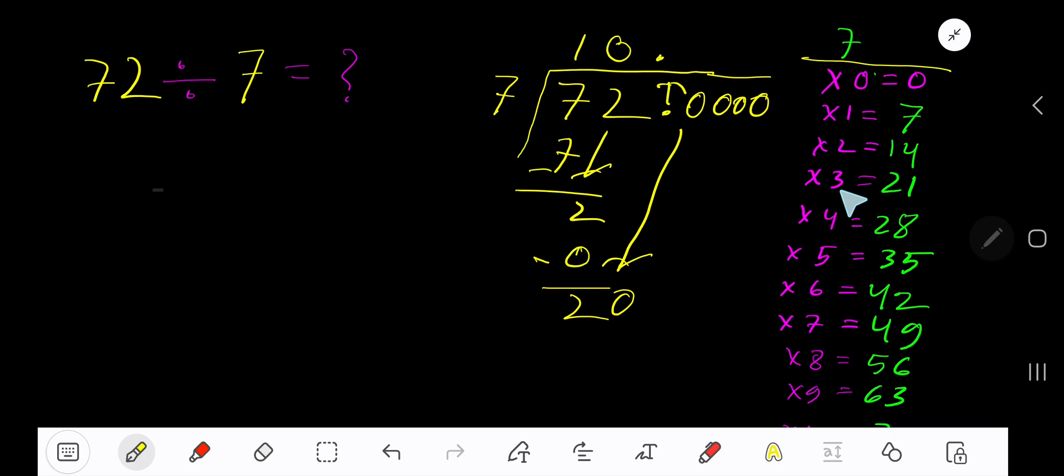7 goes into 20 how many times? 3 times would be 21, which is greater, so 2 times. 2 times 7 is 14. Subtract to get 6.